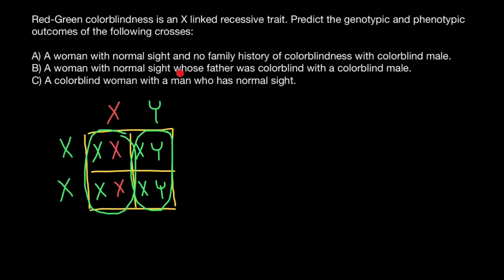Next question: a woman with normal sight whose father was colorblind, crossed with a colorblind male. Her father's genotype would be a defective X chromosome and a normal Y chromosome, and the mother's genotype would be two normal X chromosomes. From the mother's side, this woman got a normal X chromosome, but from the father's side she can only get a defective X chromosome. So she is an obligate carrier.